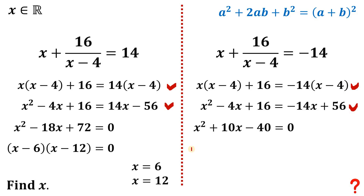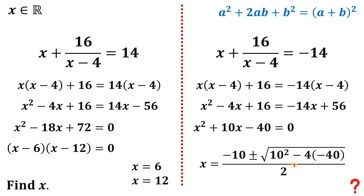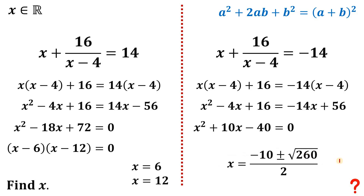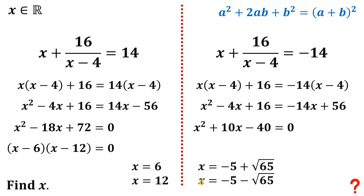For the second case, we get x squared plus 10x minus 40 equals 0. This is not factorable, so we use the quadratic formula: negative b plus or minus square root of b squared minus 4ac, all over 2a. Here a equals 1, b equals 10, and c equals negative 40. So we get negative 10 plus or minus square root of (100 plus 160), all over 2. That simplifies to negative 10 plus or minus square root of 260. Factoring 260 as 4 times 65, the square root of 4 is 2, and dividing by 2 gives x equals negative 5 plus or minus square root of 65.